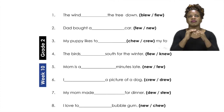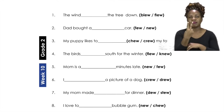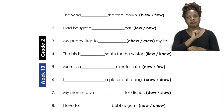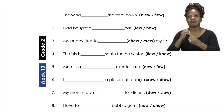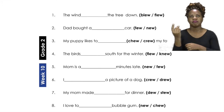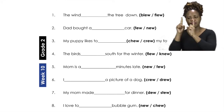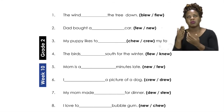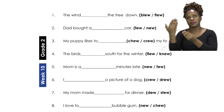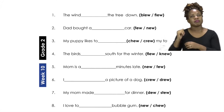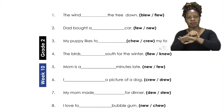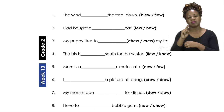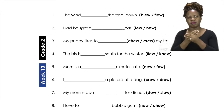Now let's move on to number two. Number two says: 'Dad bought a ___ car.' Do we say the word 'few' or 'new'? Dad bought a ___ car. If you said the word 'new', well done, good job! Please write the word 'new'.